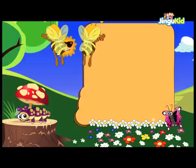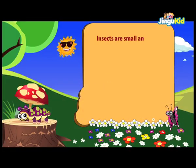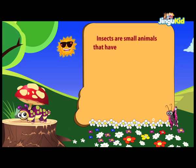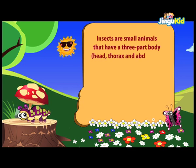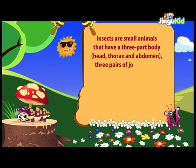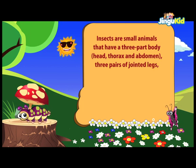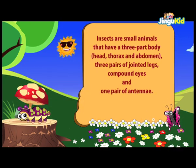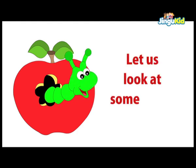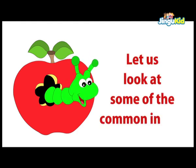Insects are small animals that have a three-part body: head, thorax, and abdomen, three pairs of jointed legs, compound eyes, and one pair of antennae. Let us look at some of the common insects.